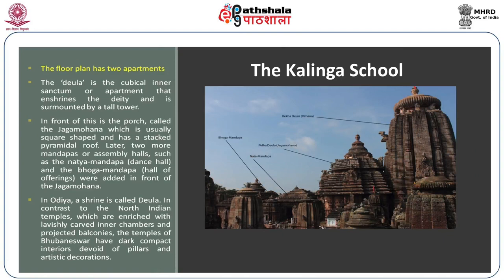The main portions of the Kalingan order of temples include the Sanctum Sanctorum, which is called Deul — the Odia word for shrine. The main part is known as the Deul, the apartment that enshrines the deity, surmounted by a tall curvilinear Shikara. In front of this is the porch called the Jagmohan, which is usually square-shaped and has a stacked pyramidal roof. Kalingan temples started with just one Jagmohan and one Deul.